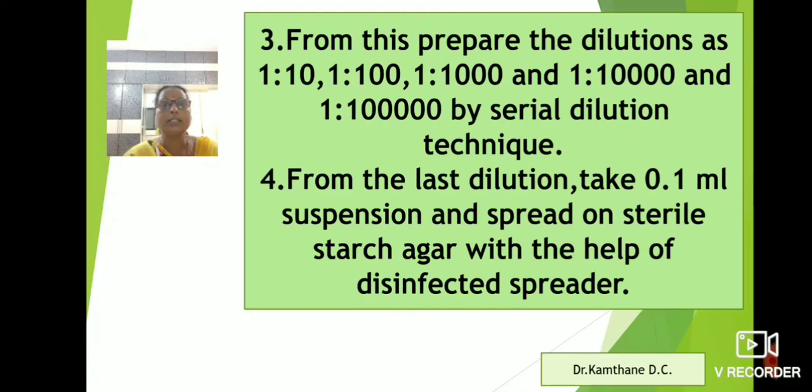Firstly, take 1 ml soil suspension which is heat treated to 9 ml sterile saline, this is giving 1:10 dilution. From this again transfer 1 ml to 9 ml sterile saline, this is giving 1:100 dilution. Likewise, prepare the dilutions up to 1:100000.